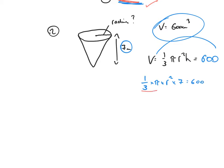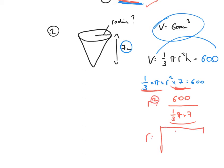I gather one third times pi times 7 together and divide, giving r squared equals 600 over one third pi times 7. I then take the square root — it's the square root of 600 over one third of pi times 7 in the denominator. Entering it into the calculator, to one decimal place, that is 9.0 centimetres. That's just a length, so the units are centimetres, not centimetres squared.